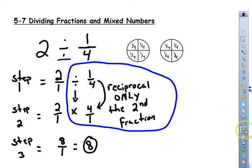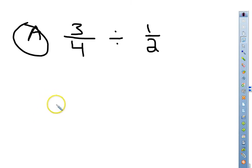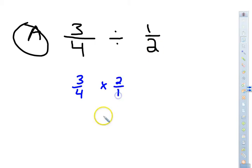So let's try a few. Go ahead and hit pause and solve this. Since these are already fractions, you don't have to do anything to them. So you get 3 fourths. I am going to rewrite that. Change this to multiplication. And then the reciprocal of the second fraction, which is going to now be 2 over 1.